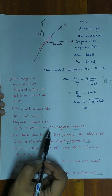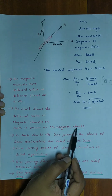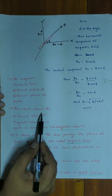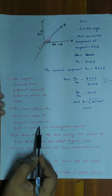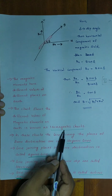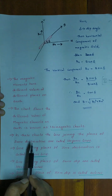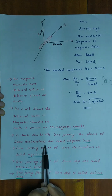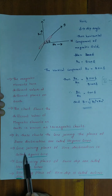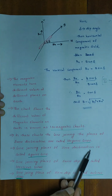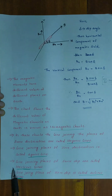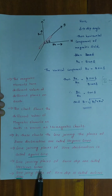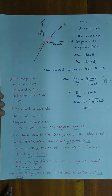A chart showing the different values of magnetic fields on earth is called an isomagnetic chart. Lines joining places of the same declination are called isogonic lines, and the line joining places of zero declination is called the agonic line. Lines joining places of the same dip are called isoclinic lines, and the line joining places of zero dip is called the aclinic line.